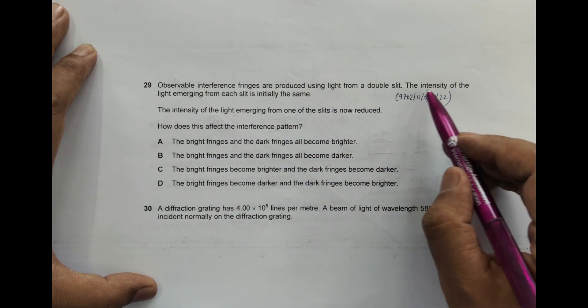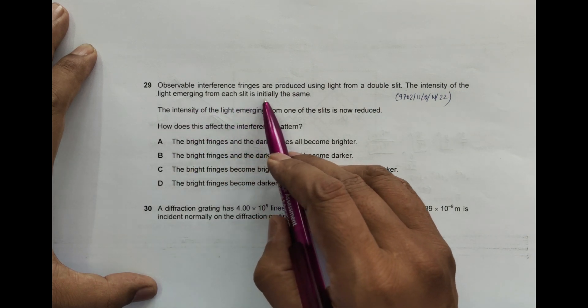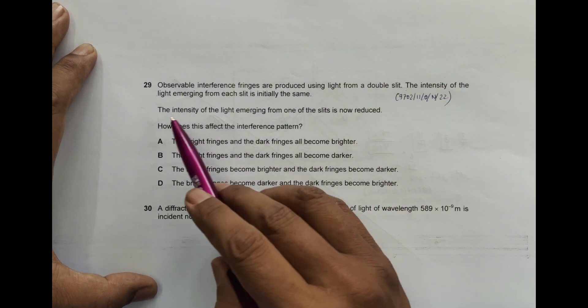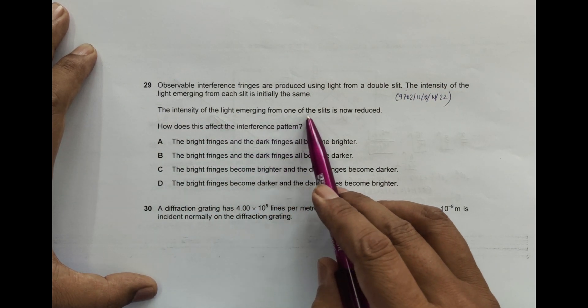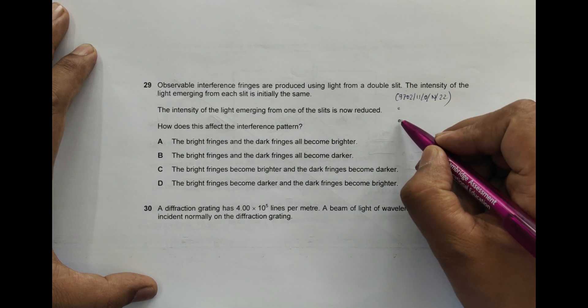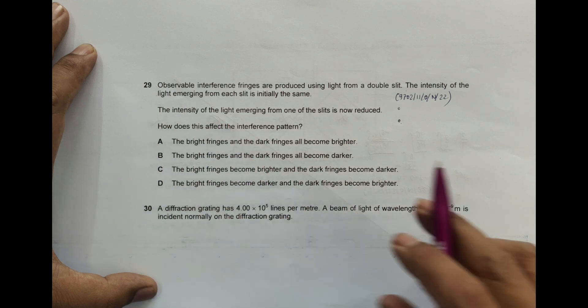The intensity of the light emerging from each slit is initially the same, so the intensity of the sources is the same. The intensity of the light emerging from one of the slits is now reduced. How does this affect the interference pattern?